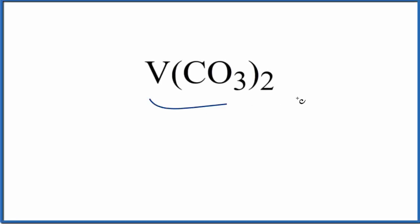Let's write the name for V(CO₃)₂. So first off, V, that's vanadium, that is a metal. In fact, it's a transition metal.